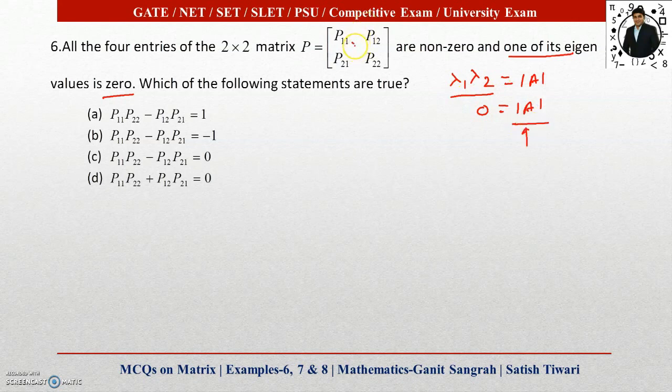So if I find the determinant for this matrix P, that will be option C, which is P₁₁·P₂₂ - P₁₂·P₂₁. Therefore, option C is correct here.